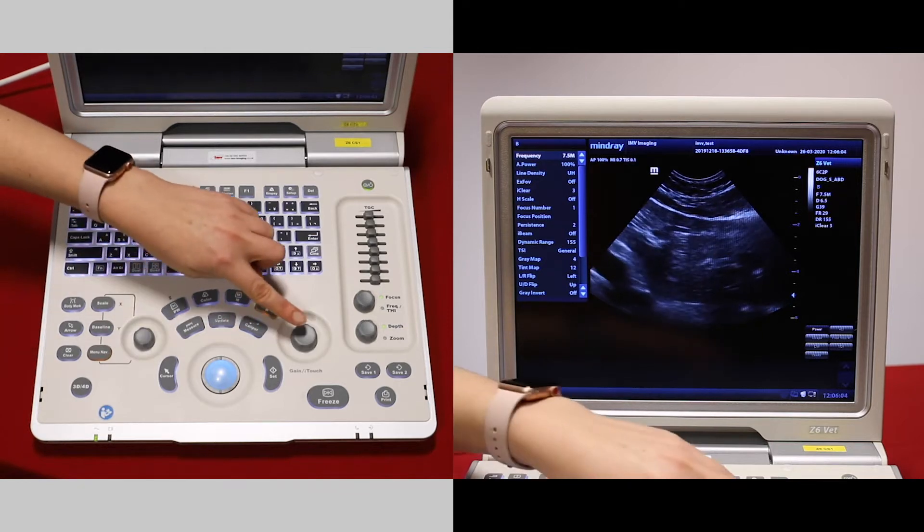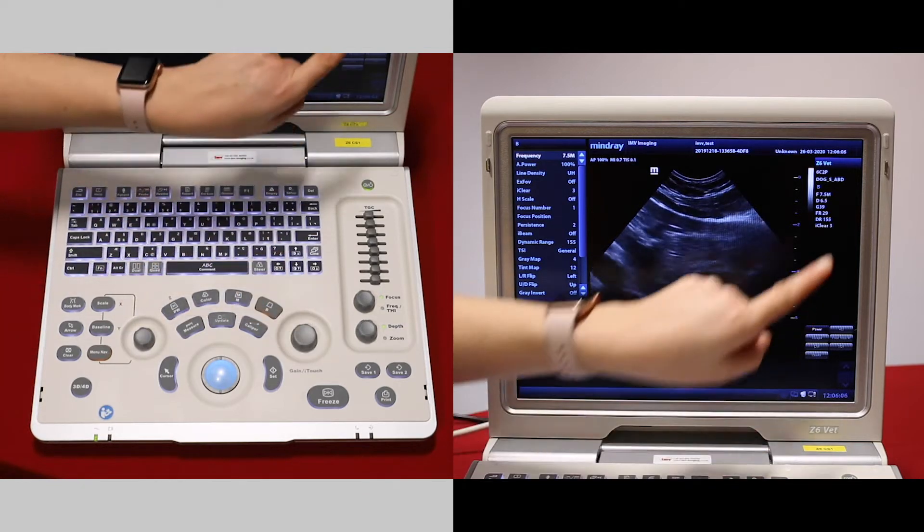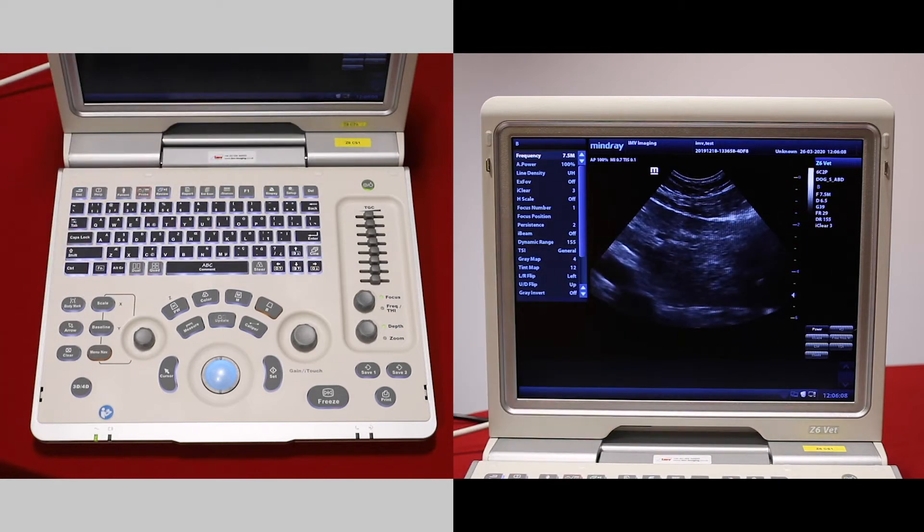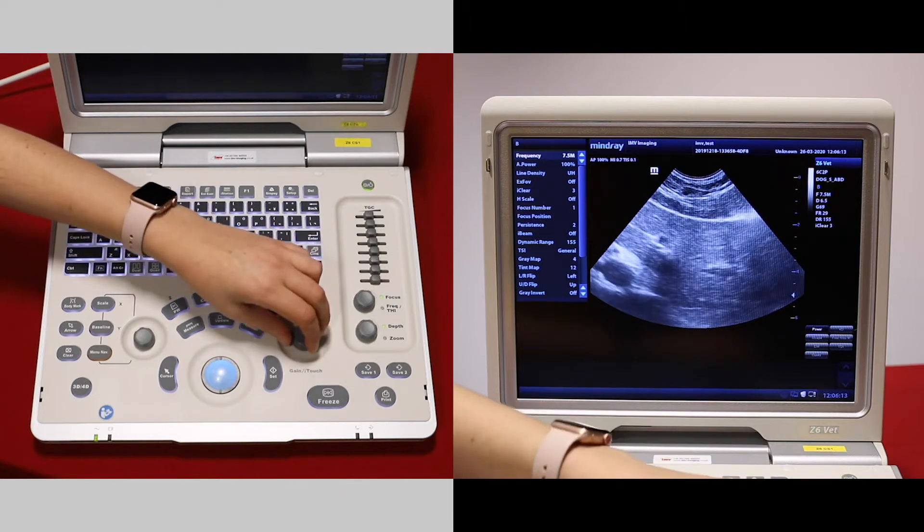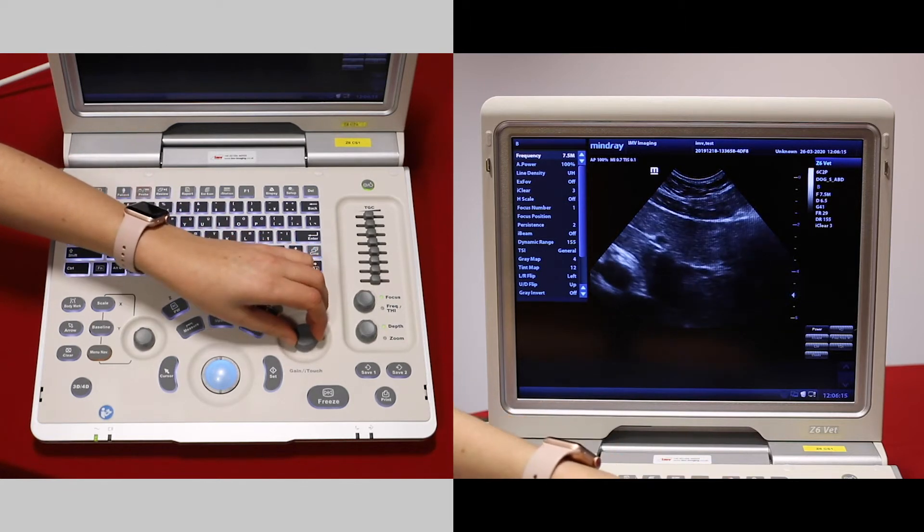The gain can be adjusted with this button here. It also tells you on the screen what our gain is. Increase it to increase overall brightness and decrease it to reduce brightness.